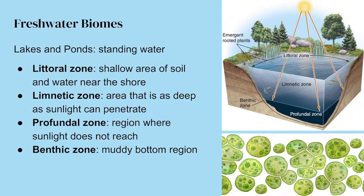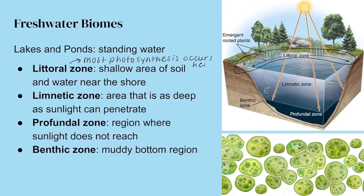Lakes in particular have different zones. The littoral zone is the shallow area of soil and water near the shore. It's the edge of the lake where plants are supported — not the whole top surface of the water. Most photosynthesis occurs in this zone because we have enough sediment and area for plants to create roots and grow. We also get algae in that area.